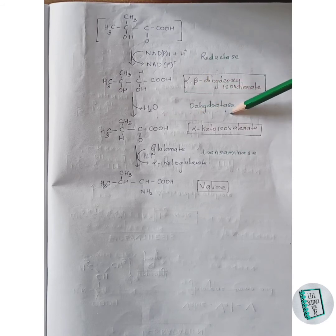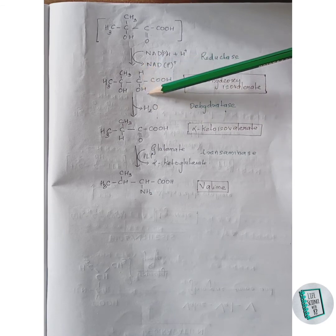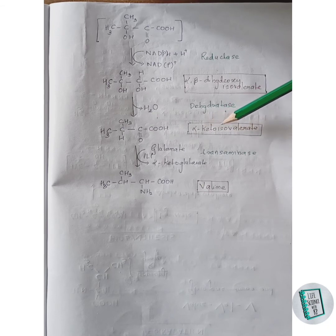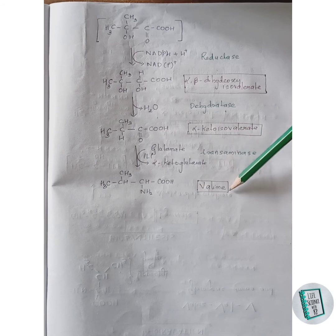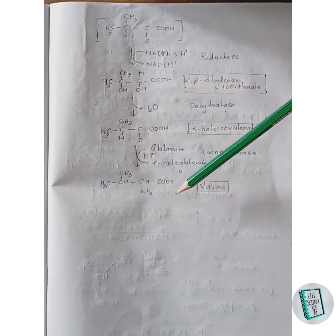Alpha-beta dihydroxy isovalerate undergoes dehydration — removal of a water molecule — in the presence of dehydratase enzyme to form alpha-keto isovalerate. The two hydrogens of the water molecule are removed from this carbon and this oxygen, and the oxygen of the water molecule is removed from this carbon. In the next step, alpha-keto isovalerate undergoes transamination in the presence of transaminase enzyme: the oxygen is removed, an amino group attaches to this carbon, and valine is formed.